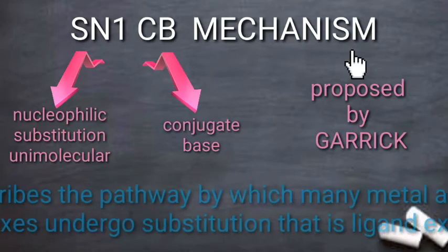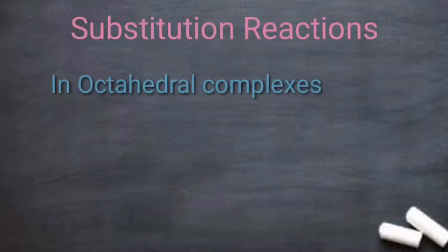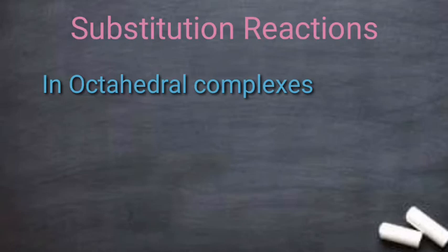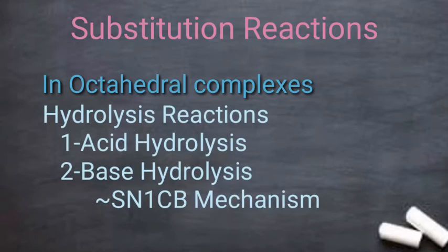This mechanism provides a pathway for many metal amine complexes undergoing substitution reactions, such as ligand exchange reactions. Substitution reactions occur in both octahedral complexes and square planar complexes. For octahedral complexes, we have substitution reactions including hydrolysis reactions. Hydrolysis reactions are of two types: acid hydrolysis or base hydrolysis. Base hydrolysis proceeds by the SN1CB mechanism.